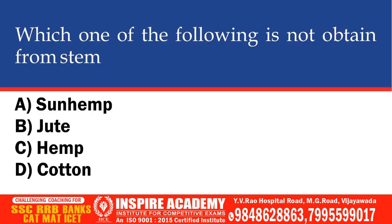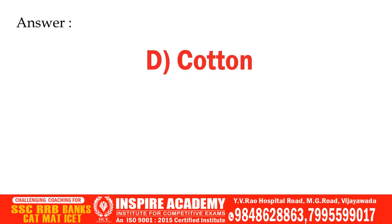Which one of the following is not obtained from stem? Options: Sunhemp, Jute, Hemp, Cotton. The correct option is Cotton.